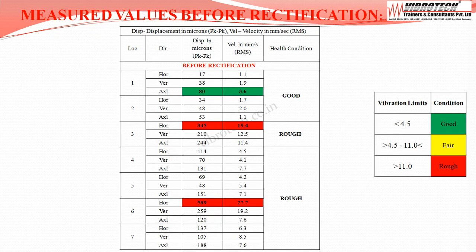Vibration data was collected. The vibration values are maximum at motor non-drive end axial: velocity up to 3.6 mm/s rms with displacement of 80 microns peak to peak. At pulley free end bearing horizontal: velocity up to 19.4 mm/s rms and displacement of 345 microns peak to peak. At low pressure cylinder bearing horizontal: velocity up to 27.7 mm/s rms and displacement of 589 microns peak to peak. The equipment health condition is rough.